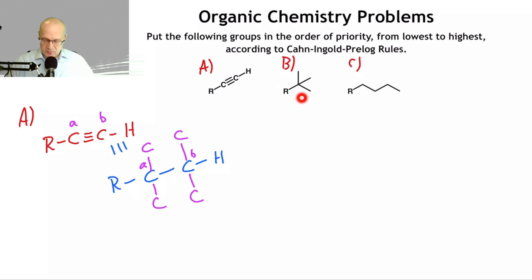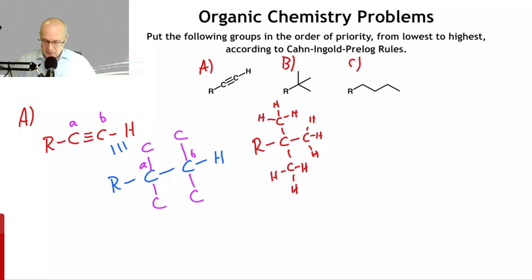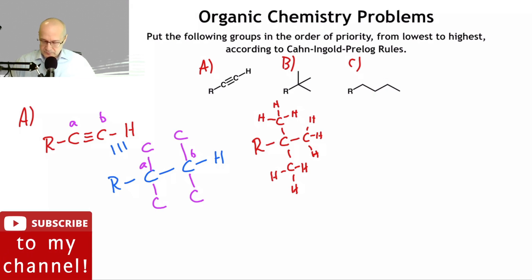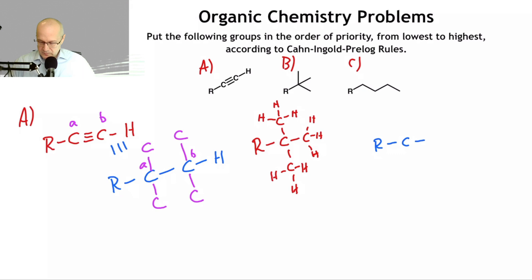Now let's draw B out, because I think it makes it easier for students to see, even though it makes the drawings a little cluttered. Sometimes it's better to be cluttered. Sorry for the clutter, but I think it's going to be helpful. Now let's draw this one out as well.